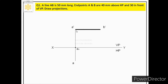From a', we draw a straight line of 50 mm parallel to XY and mark its end as b' — this is the front view of line AB. From a, we draw another straight line of 50 mm and mark its end as b — this is the top view of line AB. We then connect these points with a continuous thin line called the second projector and label the intersection as b-naught.